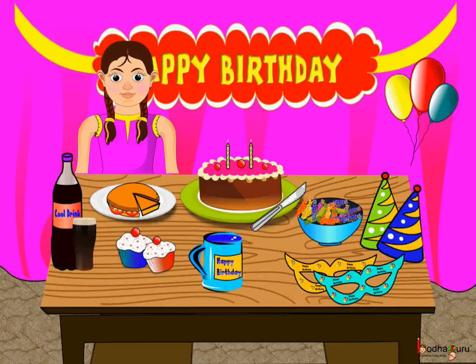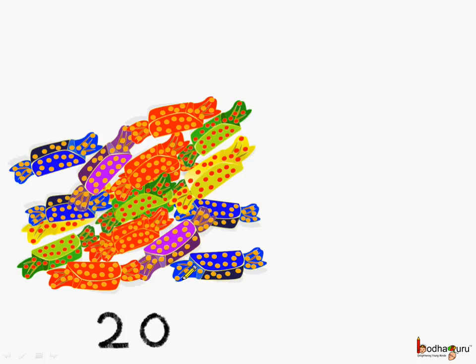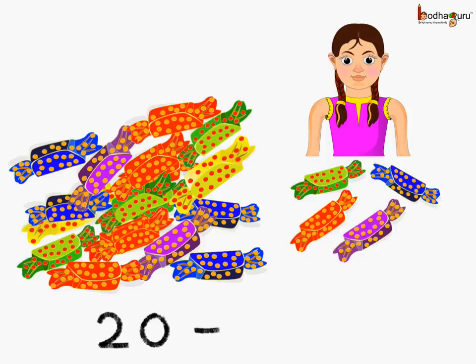But sometimes the situation might be such that the order of operation need not be according to the DMAS rule. For example, this is Khushi. On her birthday, she got 20 chocolates. So, out of the 20 chocolates, Khushi took 4 chocolates for herself and the rest she divided amongst her 8 friends. Now, this is the mathematical expression which we have, and let us solve it using the DMAS rule.